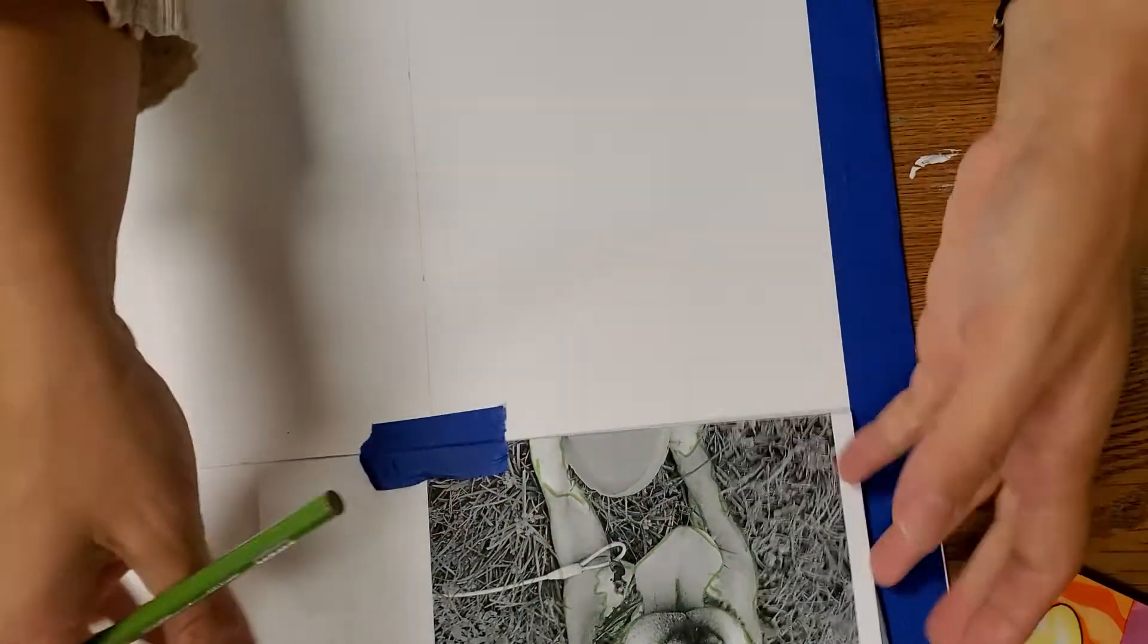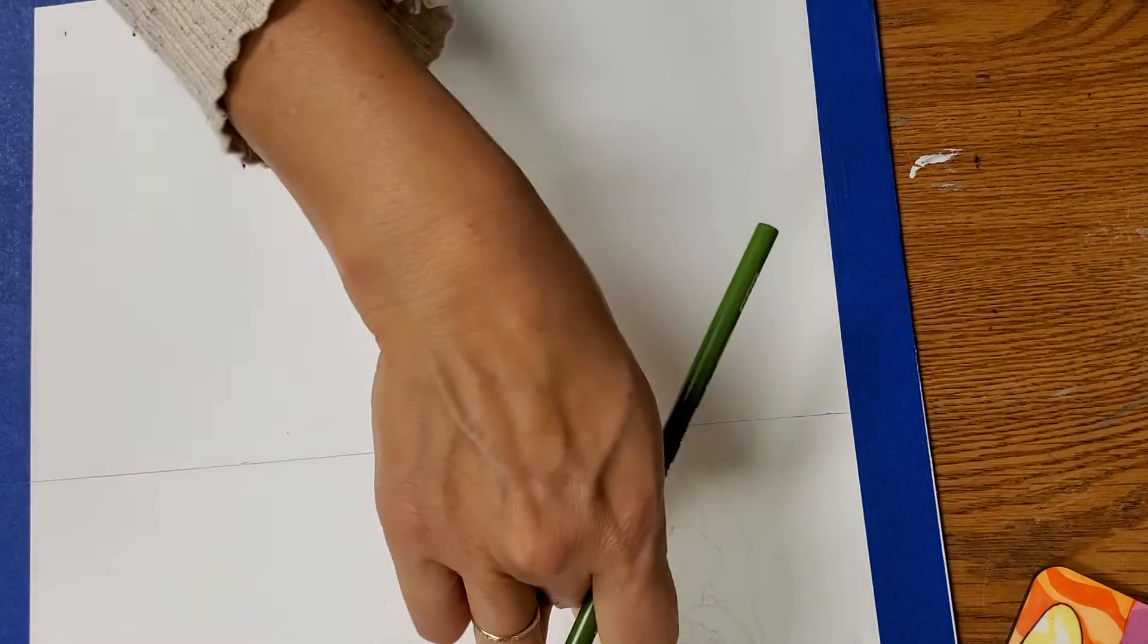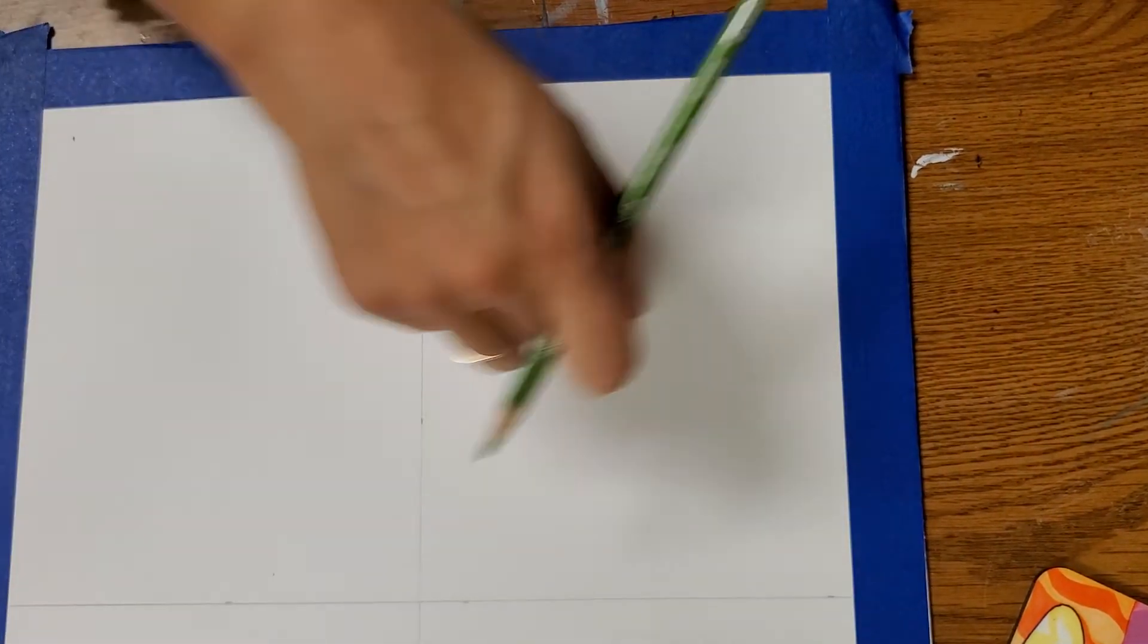You're going to do this in every single box. So, the goal is to have this same image in every single box. And then we'll go over how you're going to color it in. Okay? Have a good day.